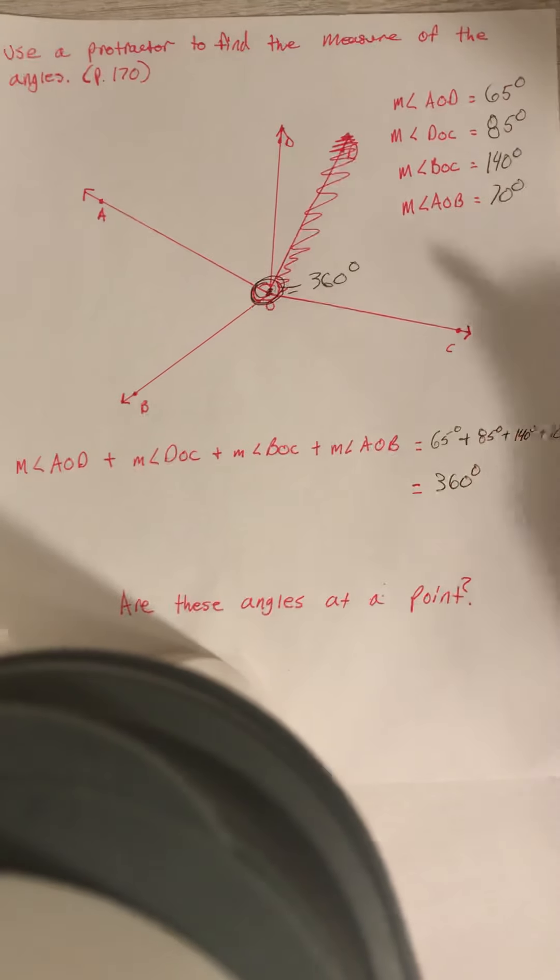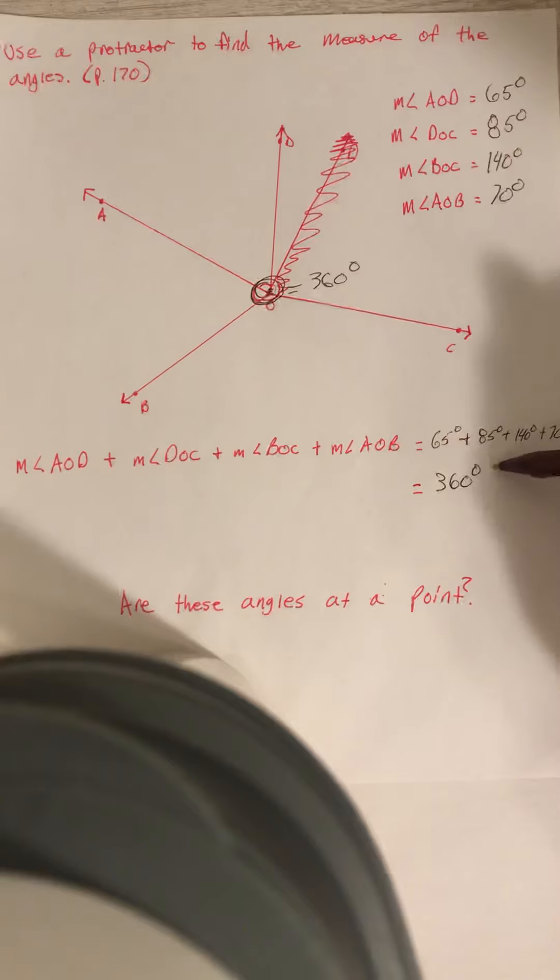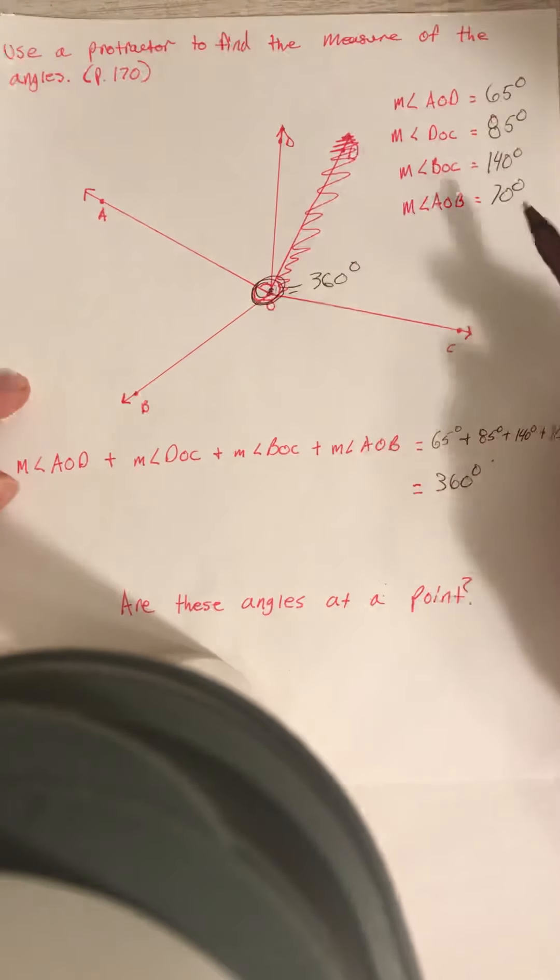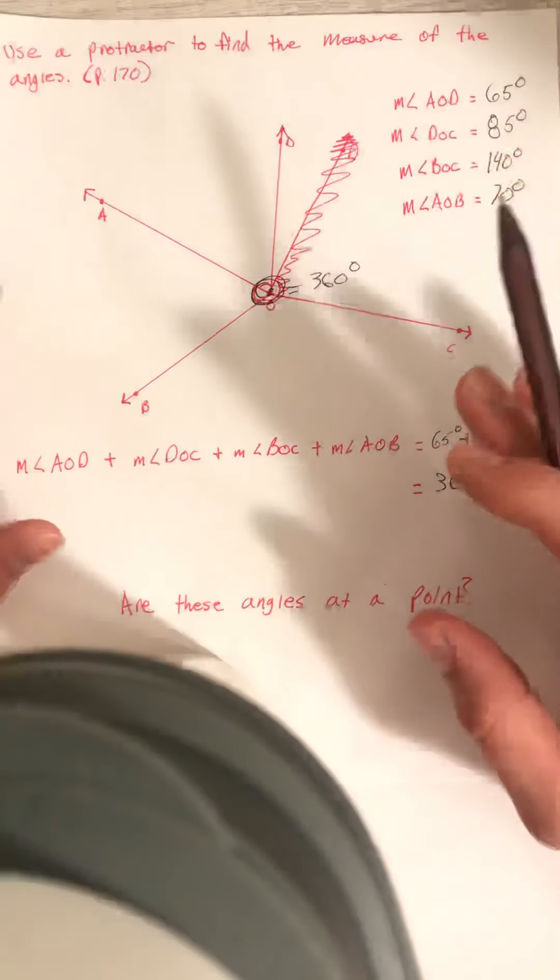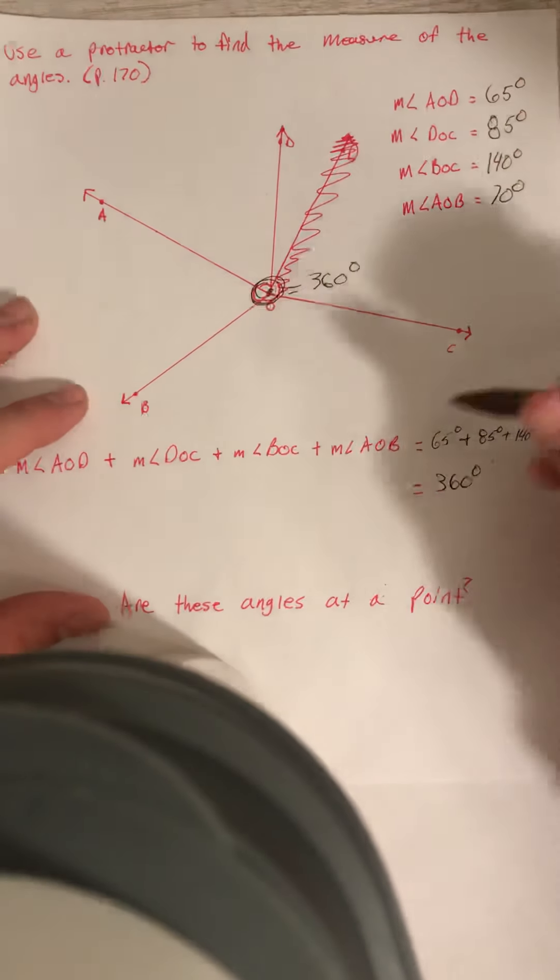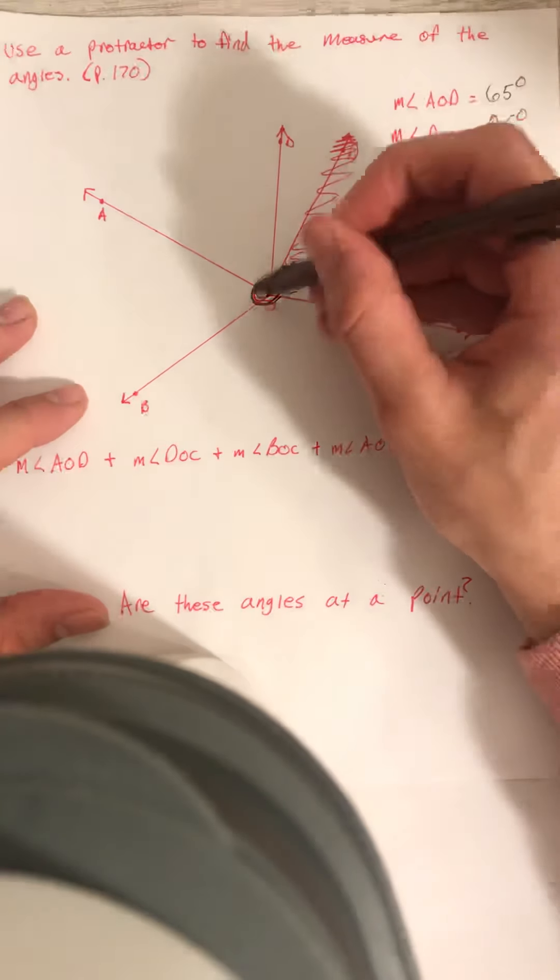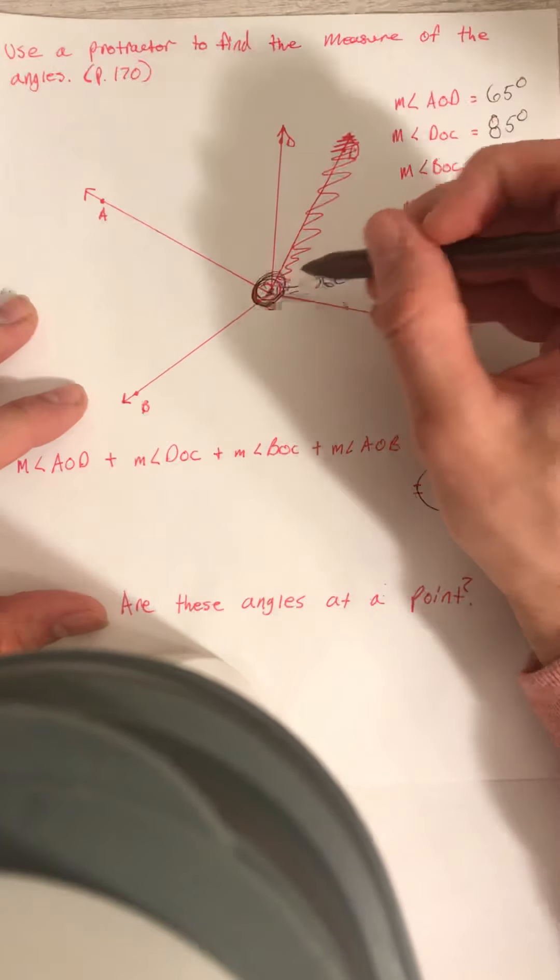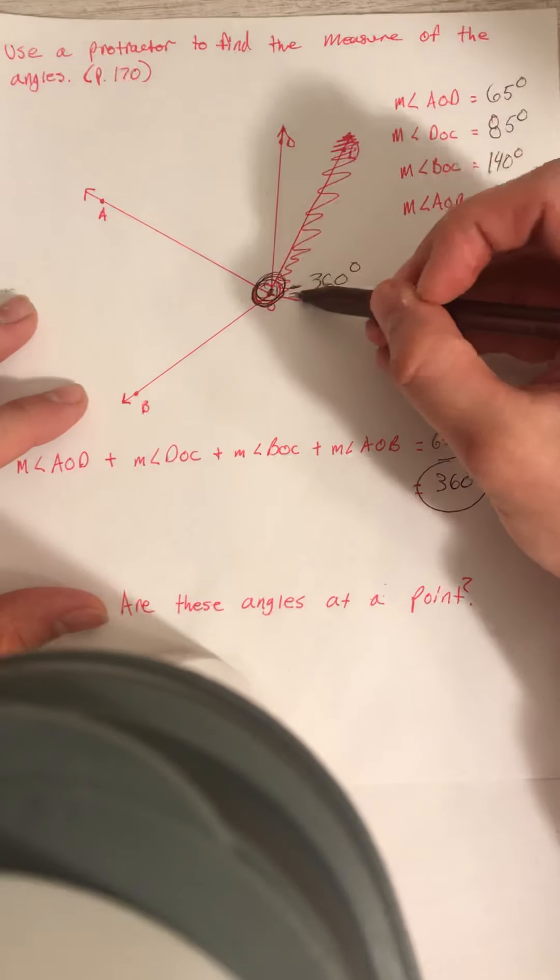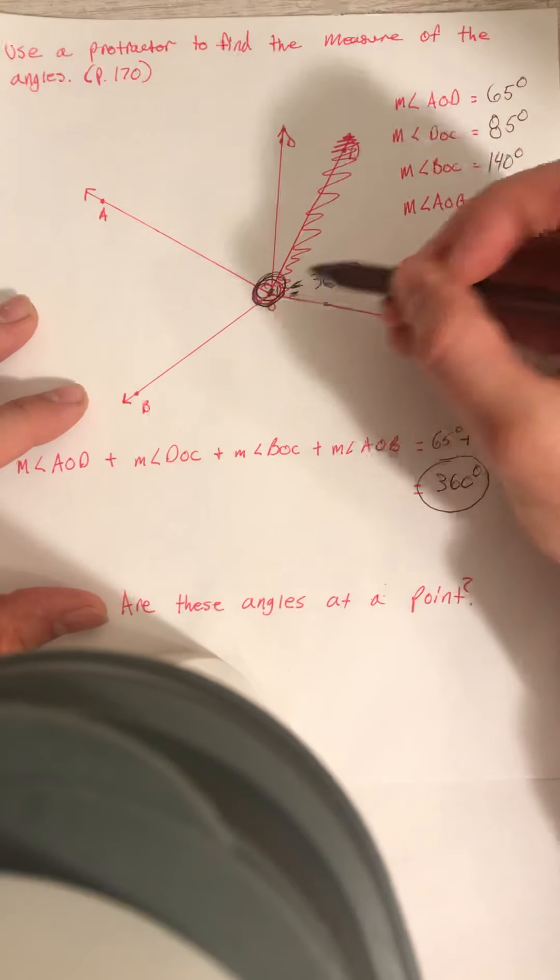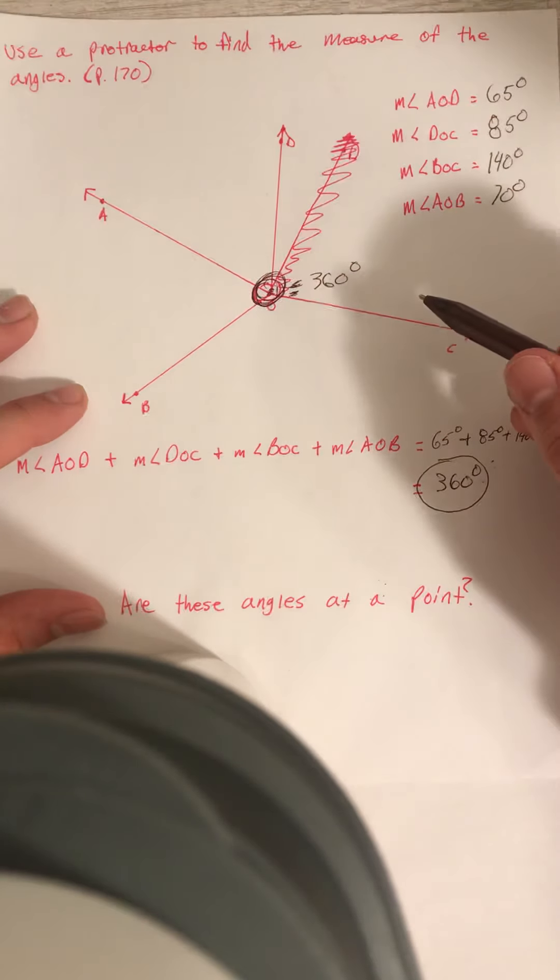So my angle measures are correct up here because it equals 360. If I was doing the math and my number was higher than 360 or my number was lower than 360, I would need to retry. I would need to redo my math and recheck it and make sure that I get this magic number. So if you see angles at a point, if you have rays and they all meet at a point, their sum, all of those angles, need to add up to 360 degrees.